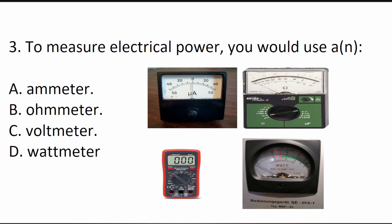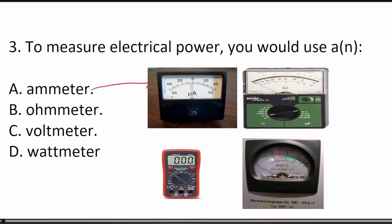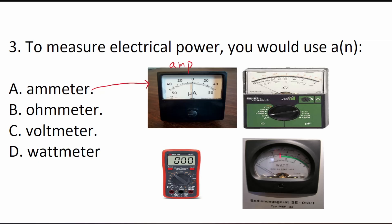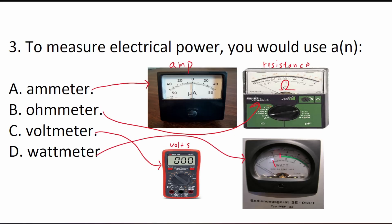Question 3 asks: to measure electrical power, you would use which instrument? The first picture is an ammeter, which measures amps — that is electrical current. The second picture is an ohmmeter, which measures resistance in ohms. The third picture is a voltmeter, which measures volts. The fourth picture is a wattmeter, which measures watts. To measure electrical power — which is always expressed in watts — you would use D, the wattmeter.